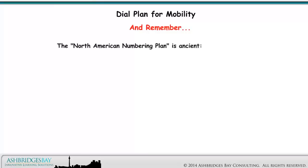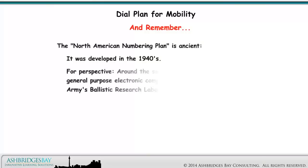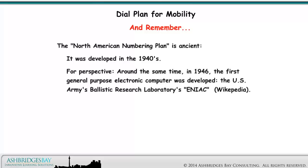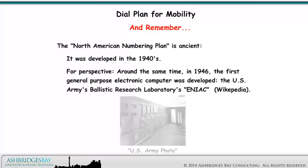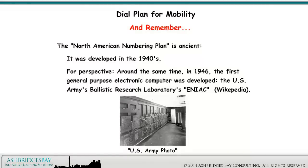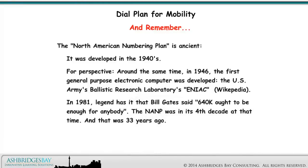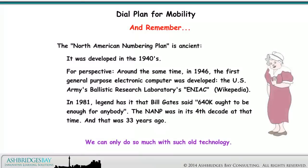The North American Numbering Plan is ancient — it was developed in the 1940s. For perspective, around the same time in 1946, the first general purpose electronic computer was developed: the U.S. Army's Ballistic Research Laboratory's ENIAC. In 1981, legend has it that Bill Gates said, '640K ought to be enough for anybody.' The NANP was in its fourth decade at that time, and that was 33 years ago. We can only do so much with such old technology.